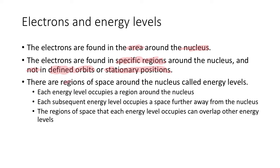There are regions of space around the nucleus — just a 3D area around something — and these are called energy levels. Each energy level occupies a region around the nucleus, and each subsequent energy level occupies a space further away. Think of these like car parking spots: car park 1 is closest to the entrance, car park 2 is further away, car park 3 is further away still. Sometimes these regions can overlap other energy levels, which can create some difficulties later on.